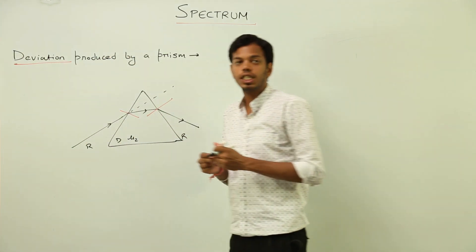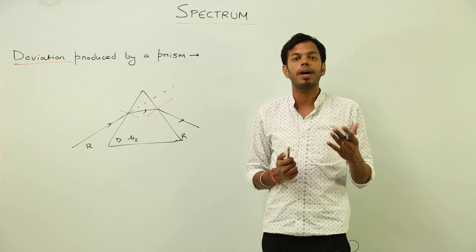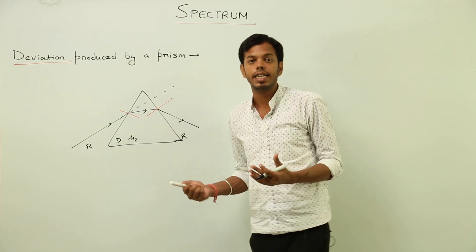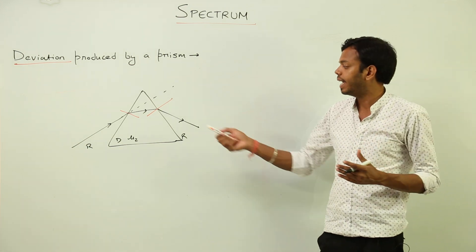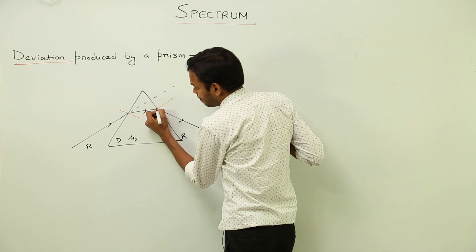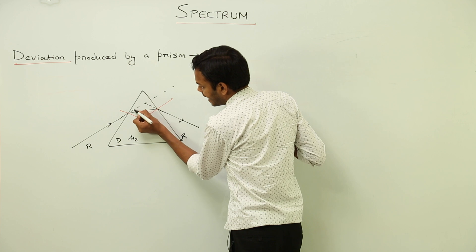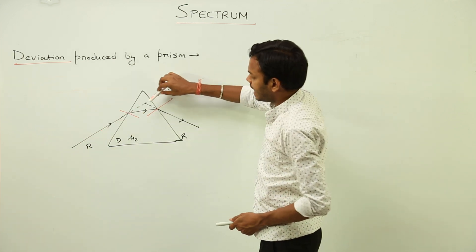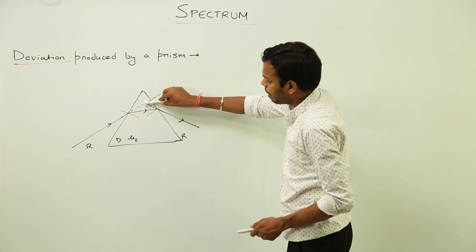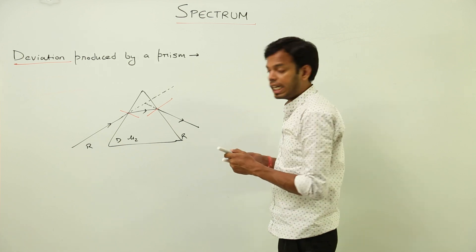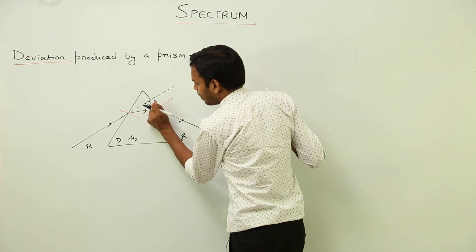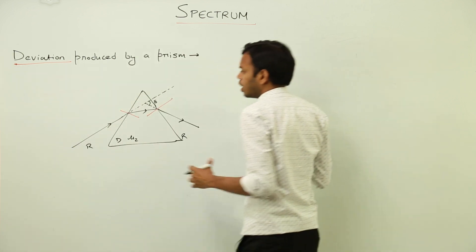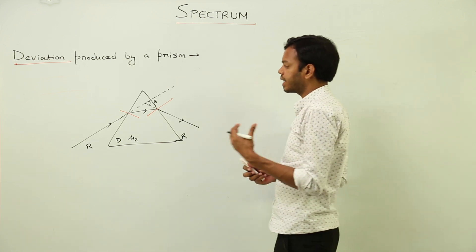Deviation is the change in the original path of an incident ray, or the total change produced between the incident and emergent path. If I extend and produce the incident ray, I can see how much the path has changed. This was the direction the ray was supposed to travel, but the ray actually came out in this direction. This total angular change is called the angle of deviation — the change in angle of the incident ray due to refraction through the prism.